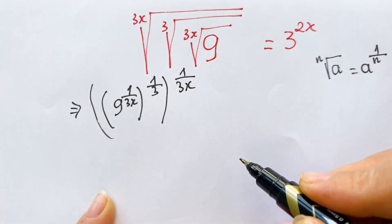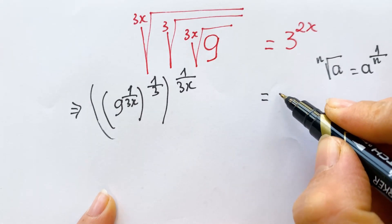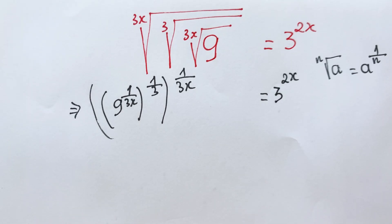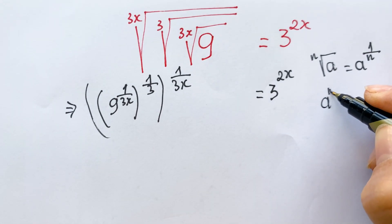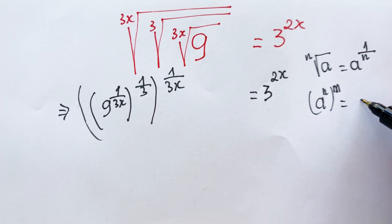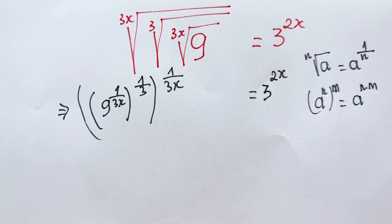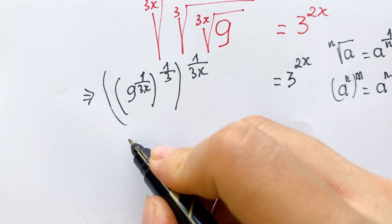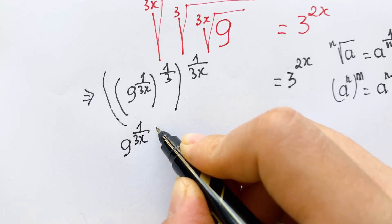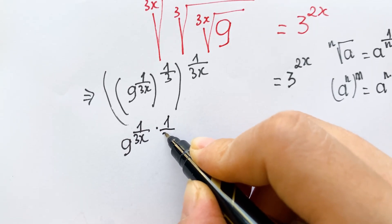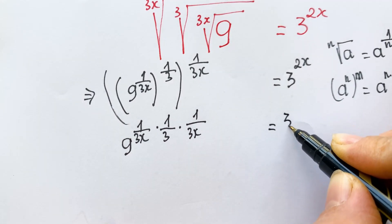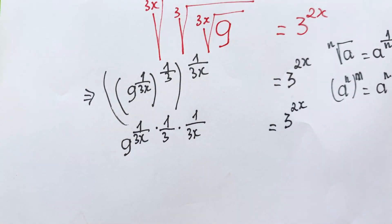This is equal to three to the power two x. Everyone can see that a to the power n times a to the power m is the exponential rule, so we have a to the power n times m. Therefore we can have nine to the power one over three x times one over three x, which equals three to the power two x.